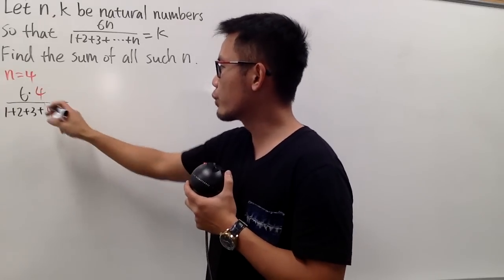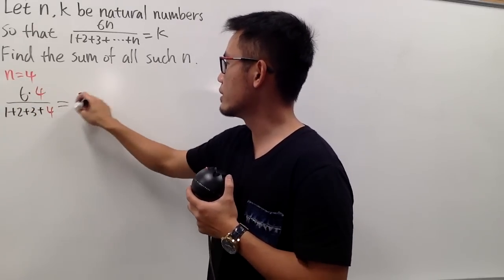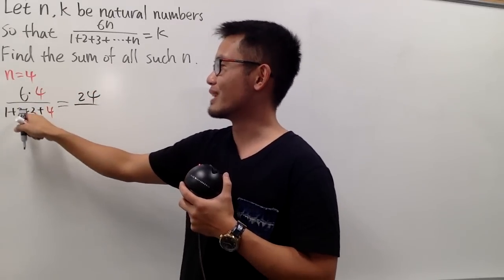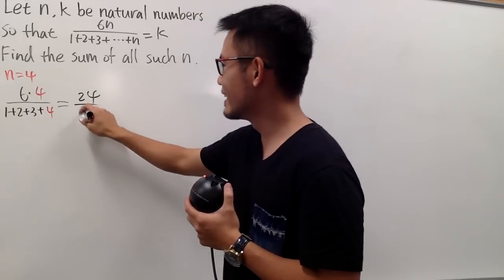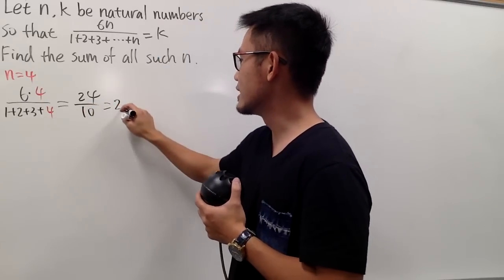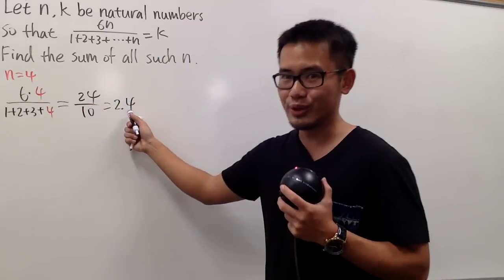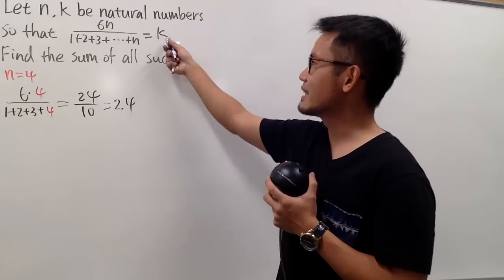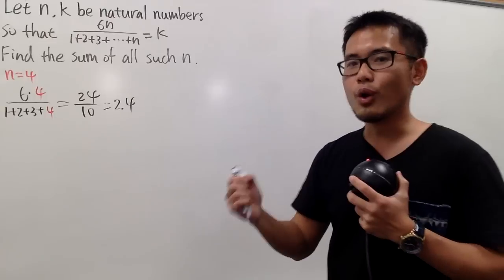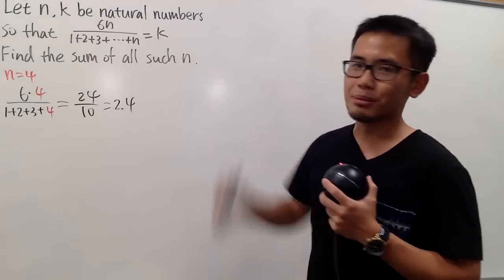And you can just work this out real quick. 4 times 6 is 24, and then 4 plus 3 plus 2 plus 1 is 10. And this, you divide, you can use decimal, which is 2.4, but this is no good. This is not k, because k has to be a positive whole number, namely a natural number.